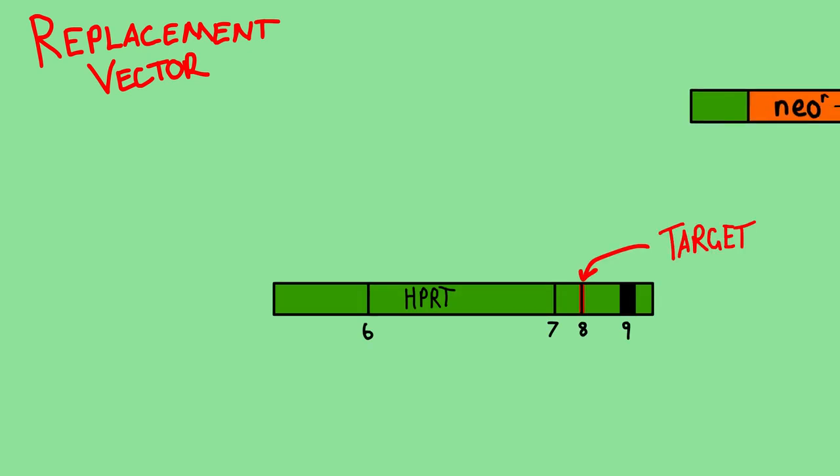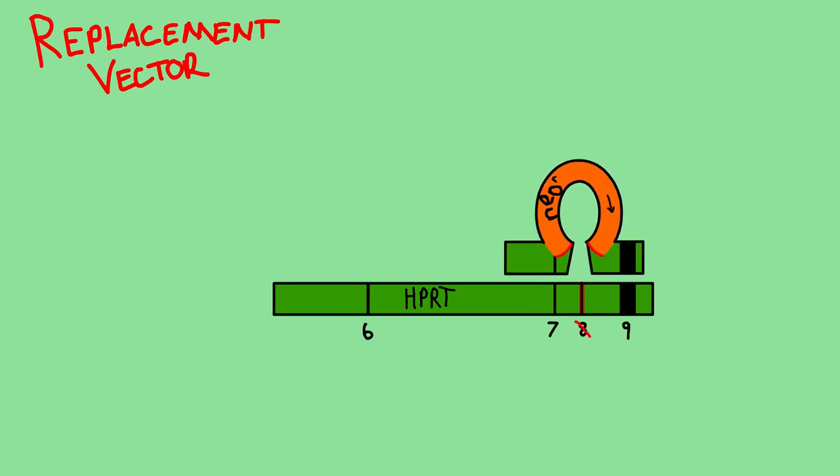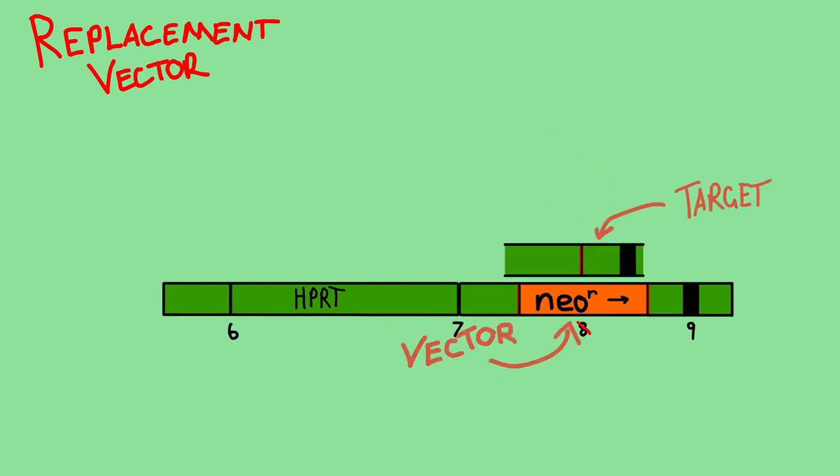The replacement vector utilizes the homology of the HPRT gene to specifically target exon 8 and replace it with the mutated version.